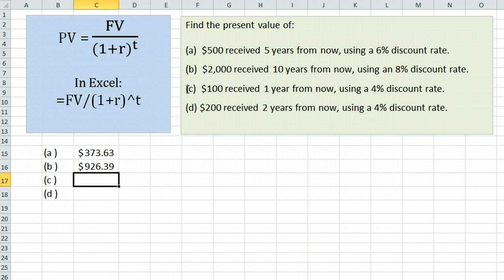In the third example, we have $100 received one year from now using a 4% discount rate. Our formula equals the future value, 100, divided by 1 plus the interest rate, 4%, or 0.04, raised to the 1, because it is one year from now.